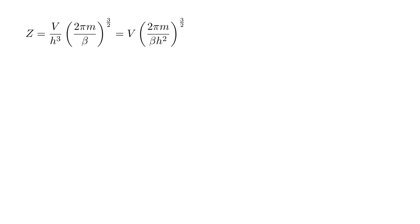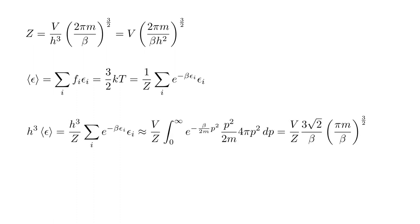This result accounts for the first constraint, that the sum over i of f_i equals one. The second constraint is that the average energy of an atom, the sum over i of f_i epsilon_i equals three halves kT. So, one over Z sum over i of e to the minus beta epsilon_i times epsilon_i equals three halves kT. We multiply by h cubed, so that the summation over cells becomes a summation over elementary volumes. Then, we use the previous integral approximation. The only change is the factor of one over Z, and the additional energy factor of epsilon, which introduces a factor of p squared over 2m into the integral. This evaluates to V over Z times three square root two over beta, times the three-halves power of pi m over beta.